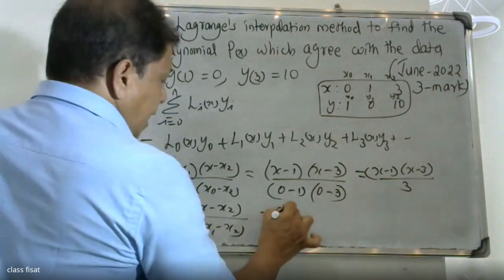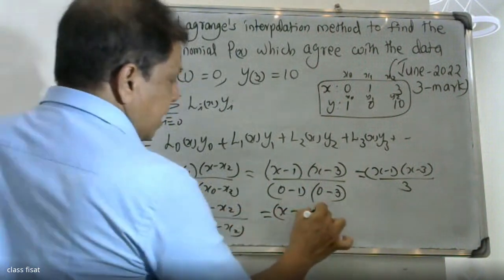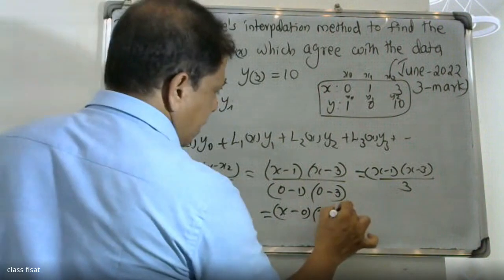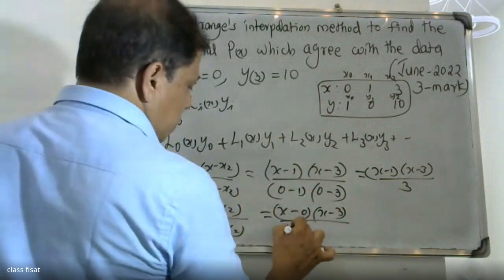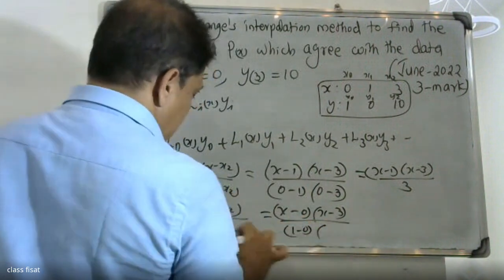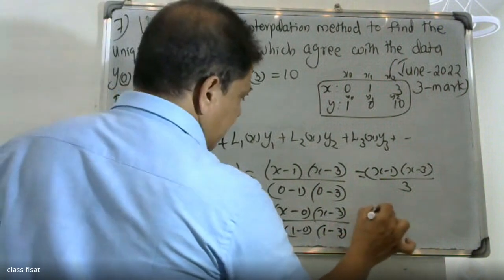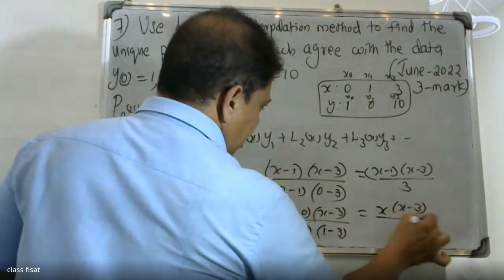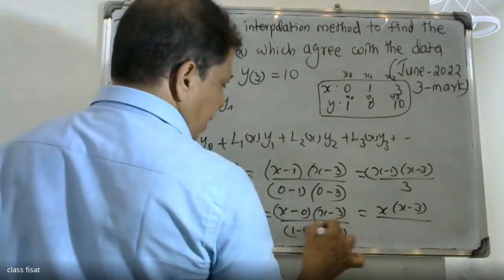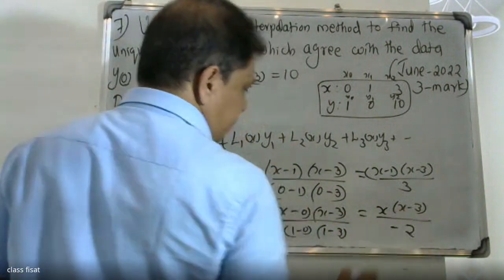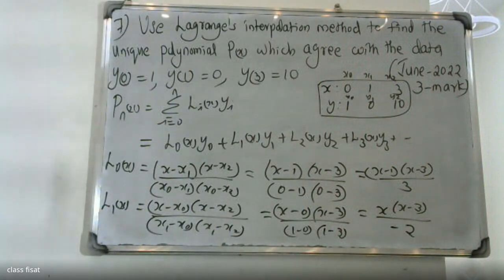Substituting values: L0(x) = (x minus 1)(x minus 3) divided by (0 minus 1)(0 minus 3), which equals x(x minus 3) divided by 1 times (minus 1)(minus 2), giving x(x minus 3) over negative 2. Now we compute L1(x).